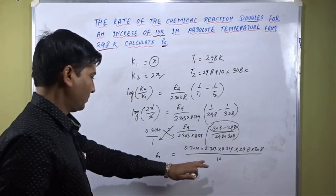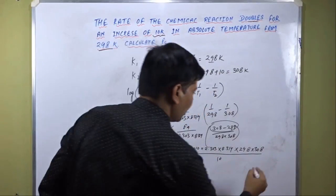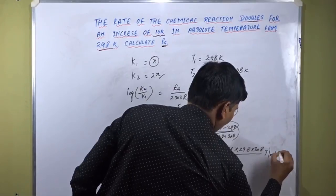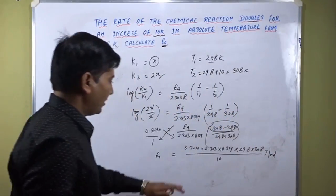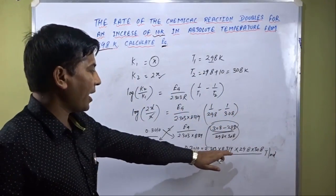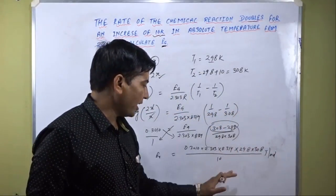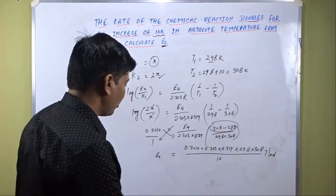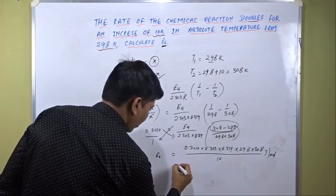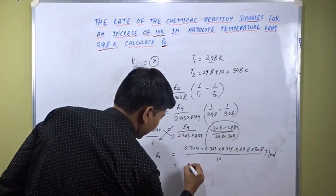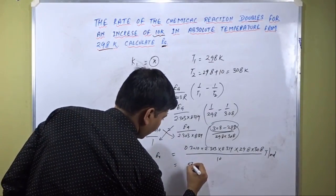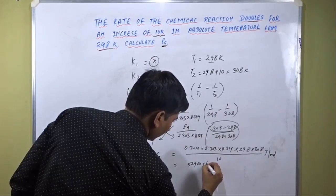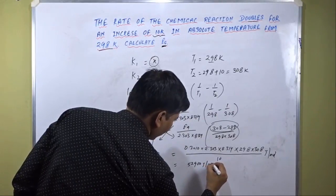The unit we get is in joules per mole. Multiplying these values and dividing by 10, the value we get is approximately 52,900 joules per mole.